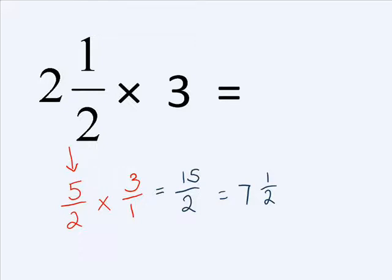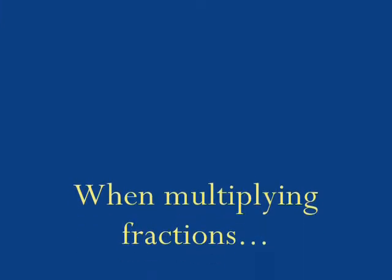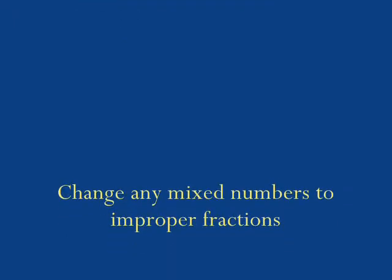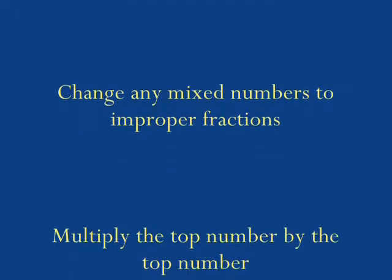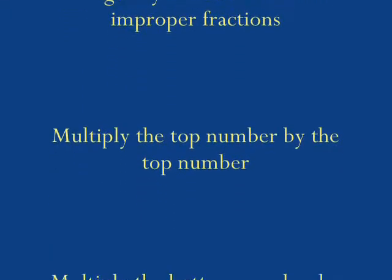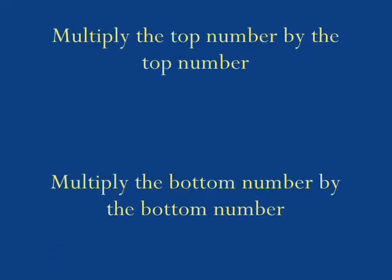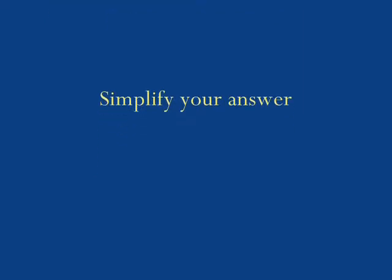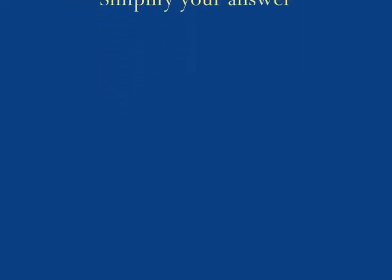Summing everything up, when multiplying fractions you should do the following: First, change any mixed numbers into improper fractions. Then, multiply the top number of the first fraction by the top number of the second fraction. Multiply the bottom number of the first fraction by the bottom number of the second fraction, and then simplify your answer. Anyway, that's all for now.